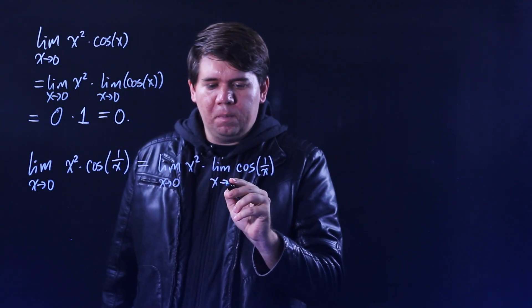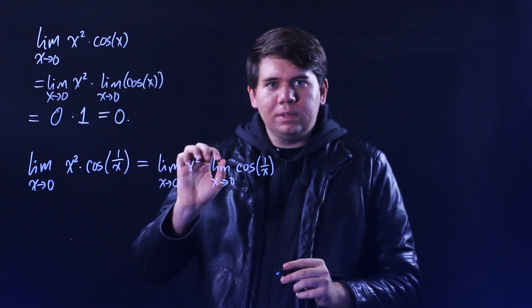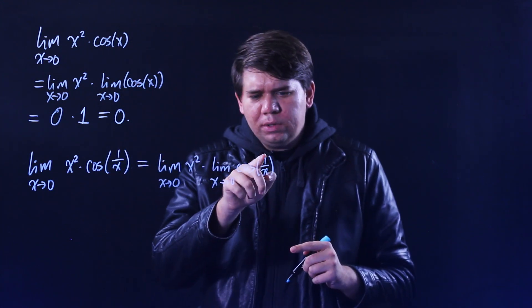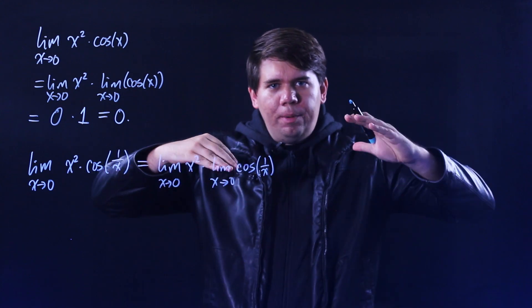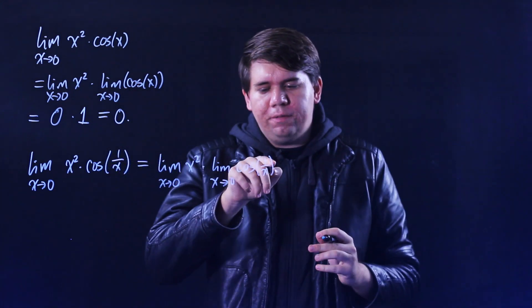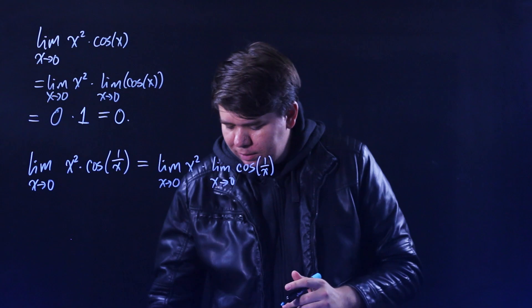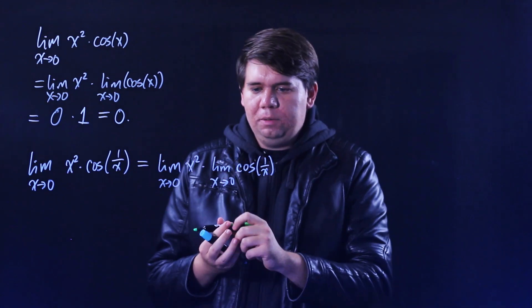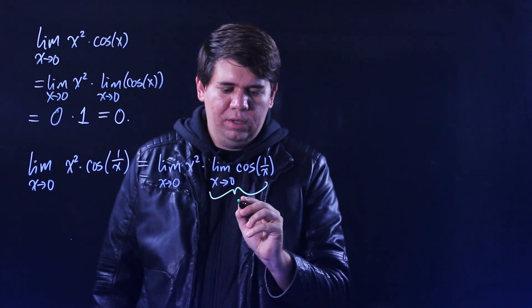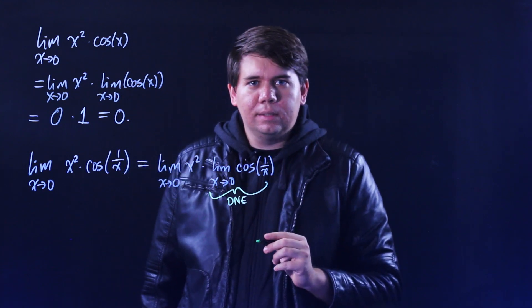But here's the problem. Although you know this first term is zero, the second term, what is cosine of one over x? Well, remember, one over x is not well defined. The limit does not exist. This limit here, this particular piece, does not exist.